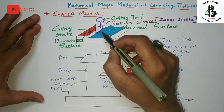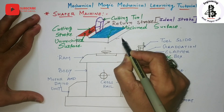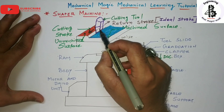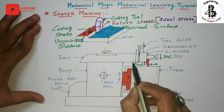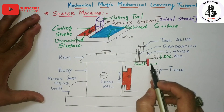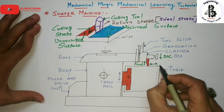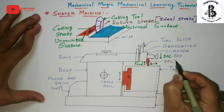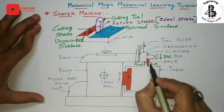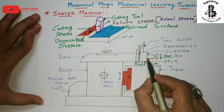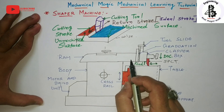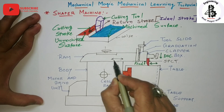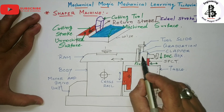Generally, the workpiece is rigidly fixed into the vice of the shaper machine, and the tool is held into the ram. The single point cutting tool, or SPCT, is mounted onto the ram, and the ram reciprocates. In shaper machines, rotary motion is converted into the reciprocating motion of the ram, which is connected with the single point cutting tool.